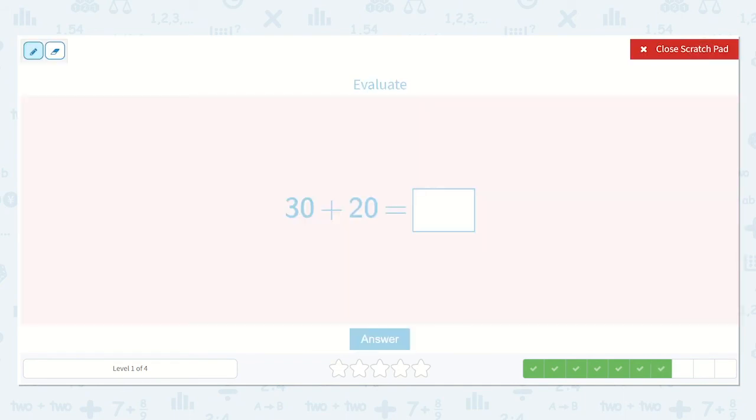Let's try this one. 30 plus 20. 10, 20, 30, plus 20. 10, 20. 10, 20, 30, 40, 50. Good. Yes, again, there are five tens, so that would be 50.